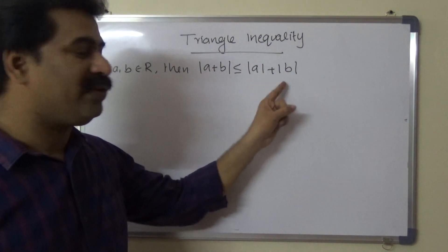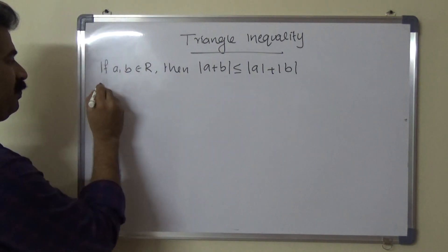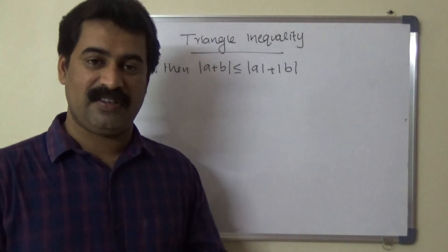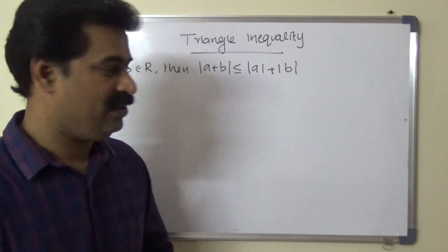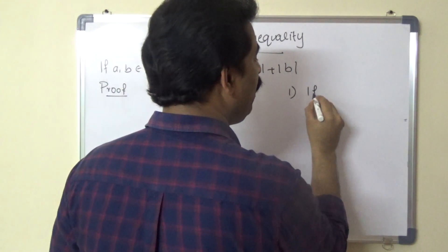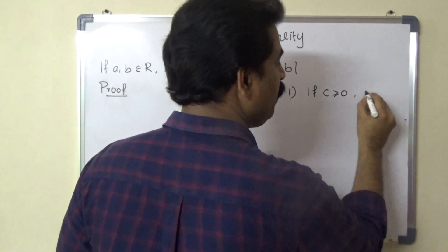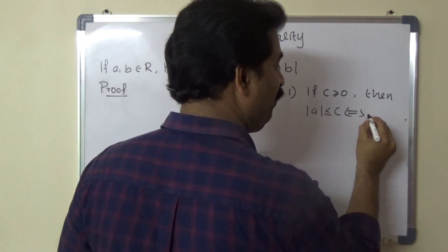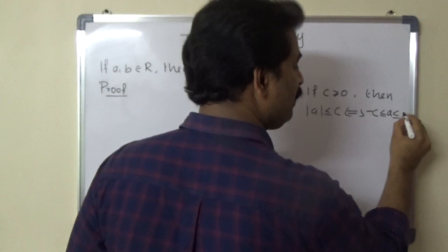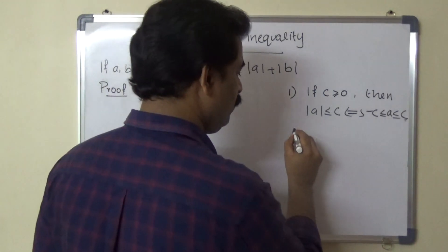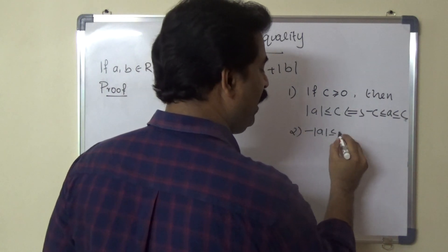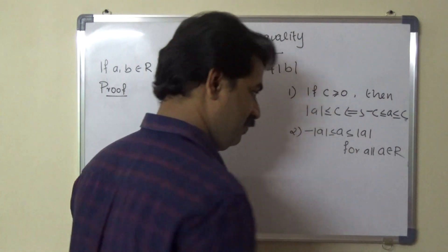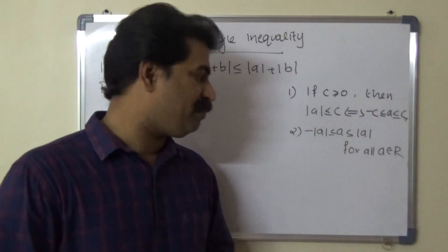Proof: Here we use two properties of the absolute value of real numbers. The first property: if c ≥ 0, then |a| ≤ c if and only if -c ≤ a ≤ c. The second property: -|a| ≤ a ≤ |a| for all a belonging to ℝ.